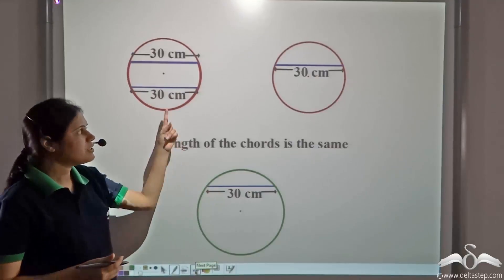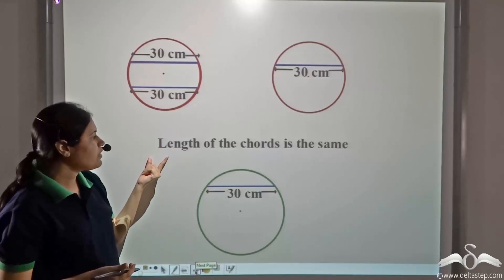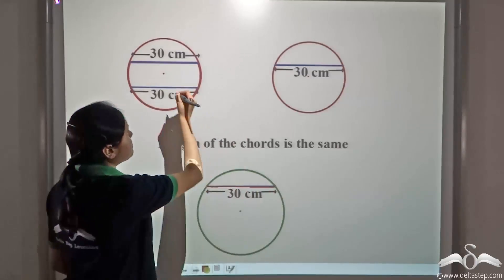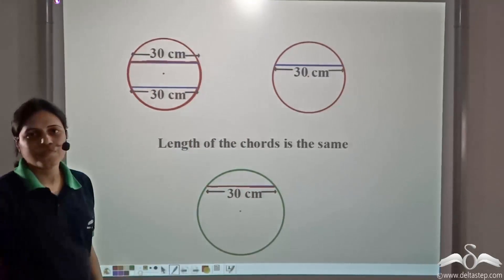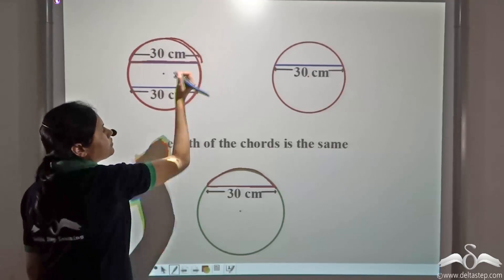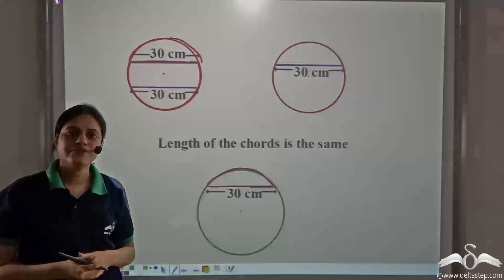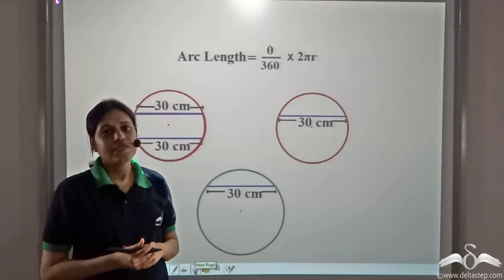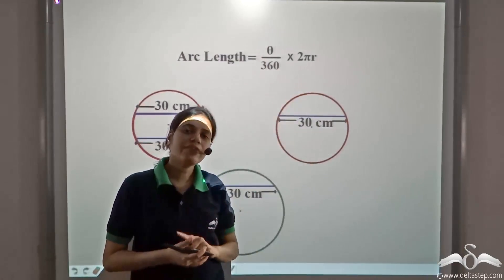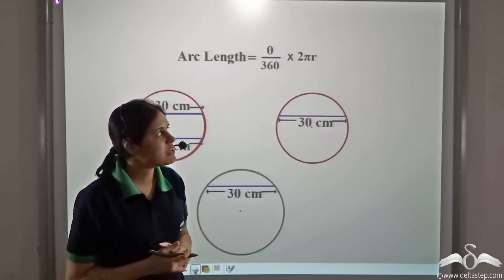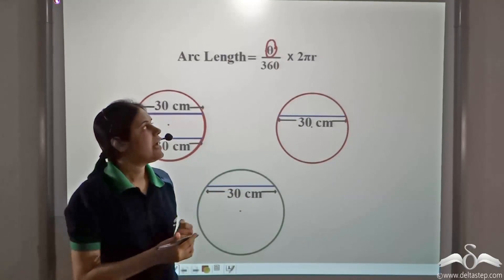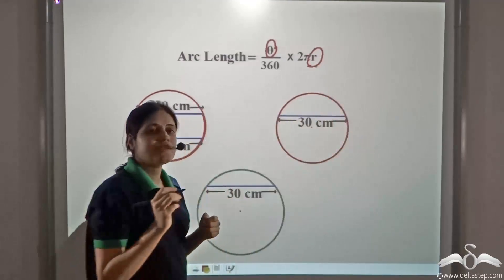We have two circles with different radii. Even though the length of the chords is the same — 30 centimeters each — the corresponding arcs are of different lengths. Recall the formula for arc length: arc length equals (theta / 360) times 2πr. Two arc lengths will be equal when the angle subtended by the arc (theta) is equal and the radius is the same.